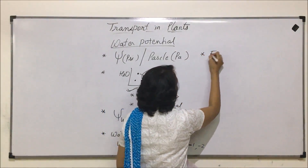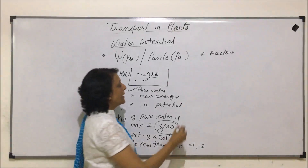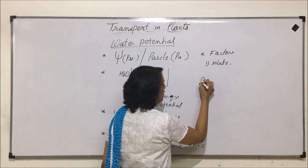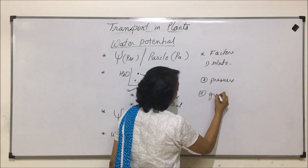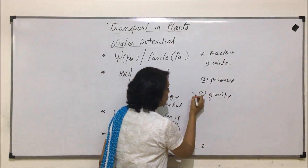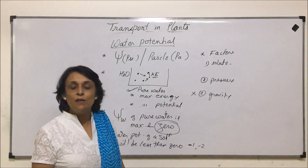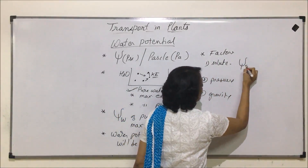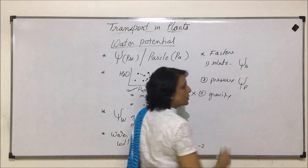When we talk of factors that affect water potential, there are actually three: one, solute; two, pressure; and three, gravity. Gravity has negligible effect, so we can ignore it in this discussion as it does not affect water potential substantially. The solute factor is written as solute potential, and pressure is also a factor, written as pressure potential.